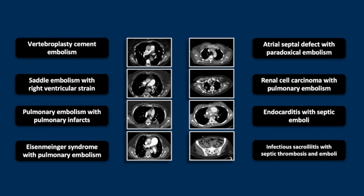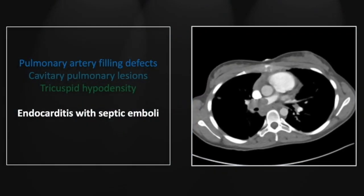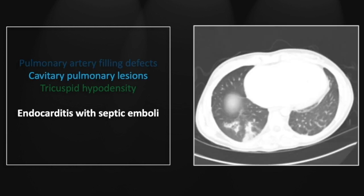Our next case is endocarditis with septic emboli. Many cases of septic embolization do not actually show the filling defect of an embolism, but here it is present to a great degree in the right main pulmonary artery. On lung windows, there are numerous small cavitary lesions as well as airspace densities that are generally wedge-shaped, consistent with embolic infarcts.